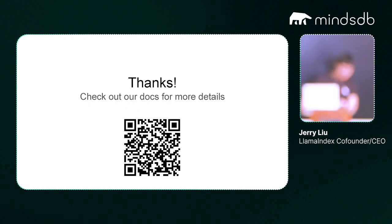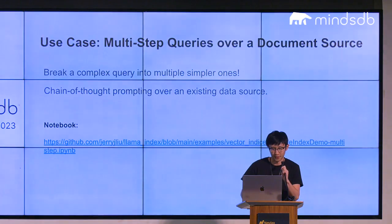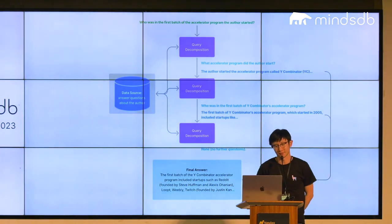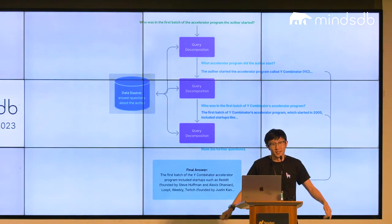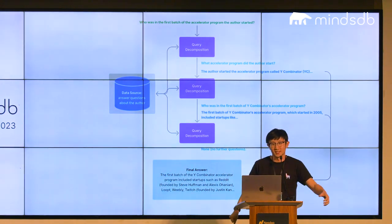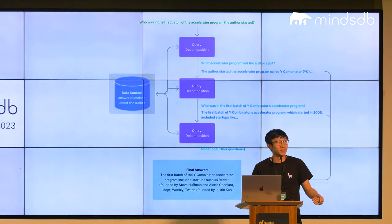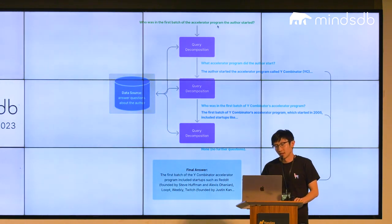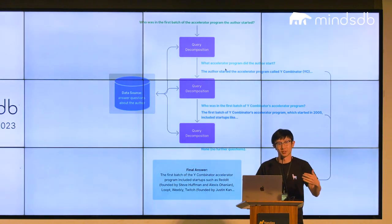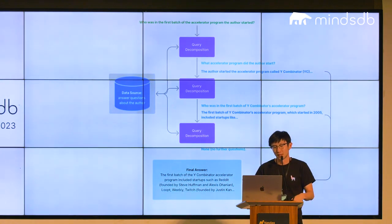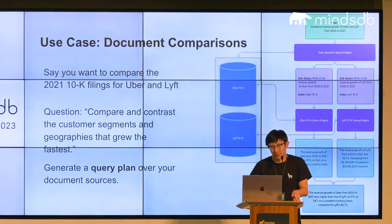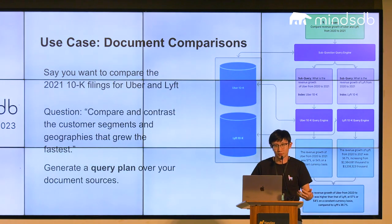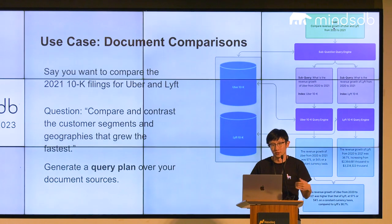Q: I'm super interested in how query decomposition works. Can you give us an overview? A: For those familiar with the ReAct framework, it's roughly similar with a slightly different prompt. The prompt looks like: here's a question, here's what the knowledge source represents — given this question, see if you can break it down into sequential questions over a knowledge source. You can do this in a sequential manner, waiting for a response before asking the next question. Or you can generate a query plan beforehand — like for document comparisons, before getting any response, you know if you want to compare Uber and Lyft revenue growth, you want a query plan that asks both data sources and joins the results at the end.